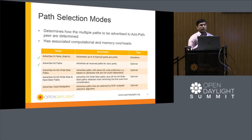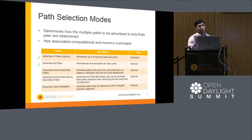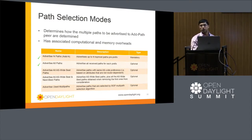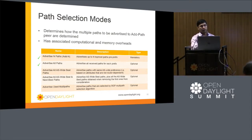There are different path selection modes that can be specified when configuring additional paths, depending on your use case. The path selection mode specifies how many paths the BGP speaker will advertise. Various strategies are defined in the draft, including advertise-all-paths and advertise-N-paths. Out of the five strategies covered by the draft, the first two — add-N and add-all — are currently supported in the OpenDaylight code.